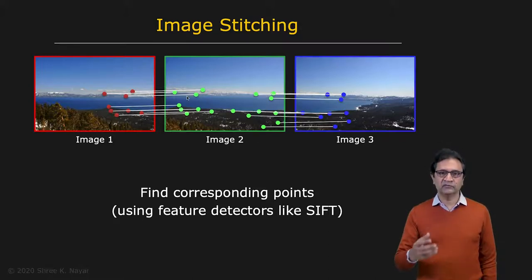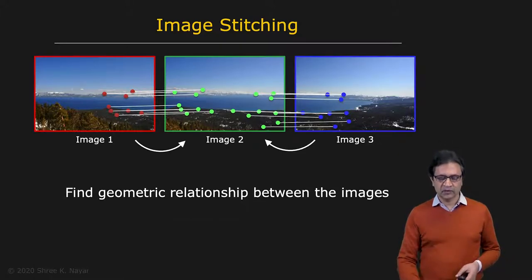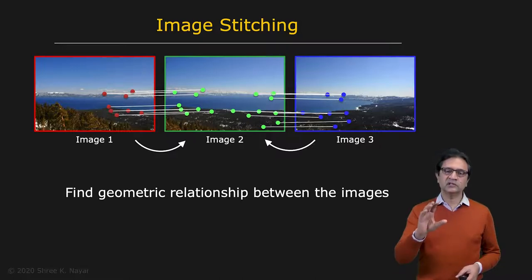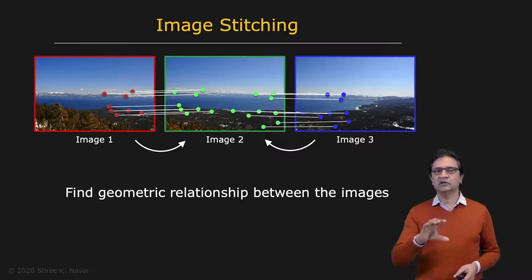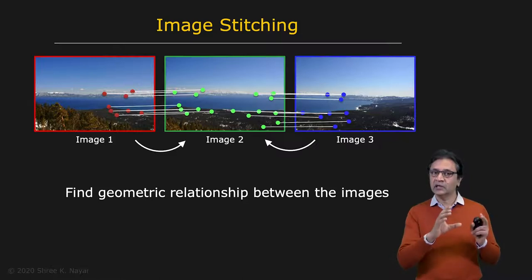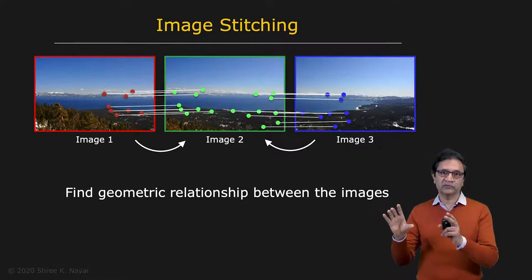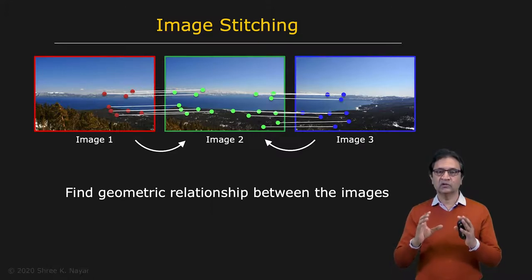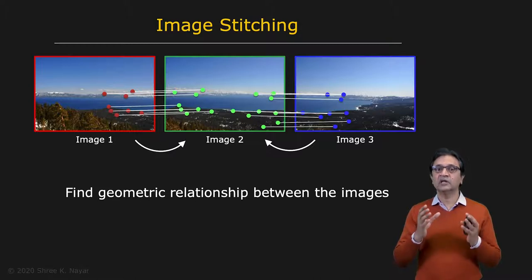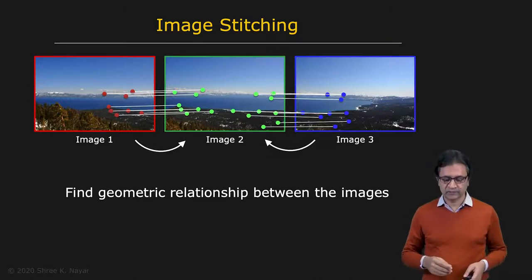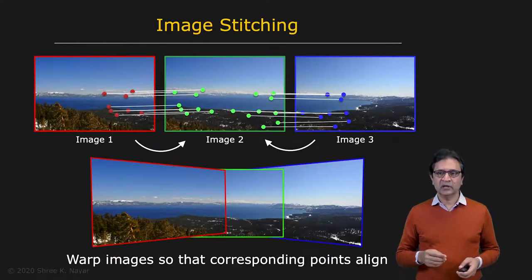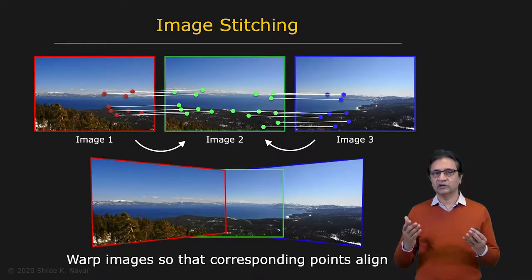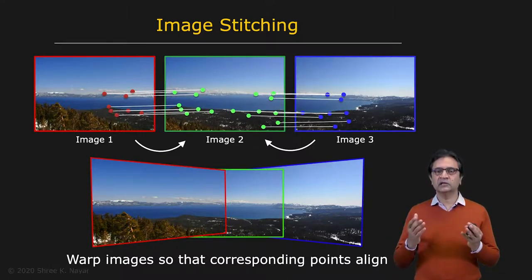Now that you have matching features, you want to figure out the geometric relationship between pairs of images — that is, what transformation takes you from one image to another so you can warp it to the coordinate frame of the other image. That transformation is called the homography. We'll spend quite a bit of time understanding what that transformation is and how to compute it. Once you can do that, you warp all images to a common coordinate frame by picking one as your reference image.